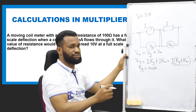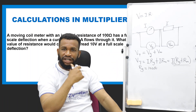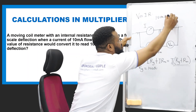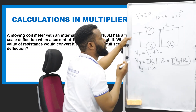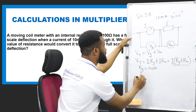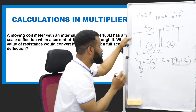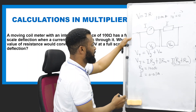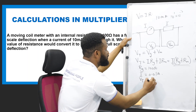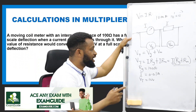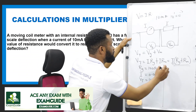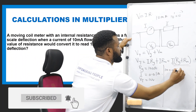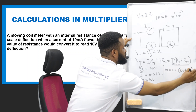The current is 10 milliamperes, which is 10 × 10⁻³ = 0.01 ampere. That is the current I flowing through the system. Vt is 10 volts, and I am looking for the resistance of the multiplier Rm. So I write: 10 = 0.01 × (100 + Rm).